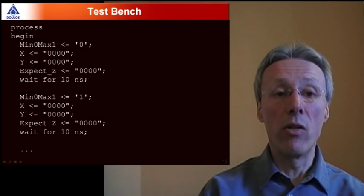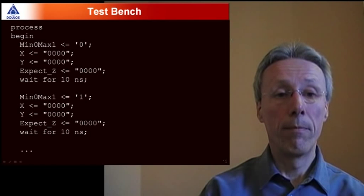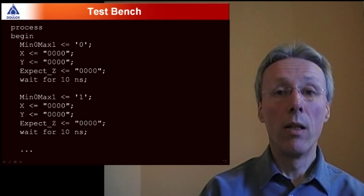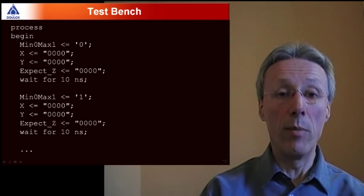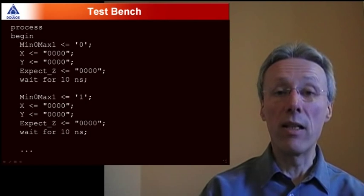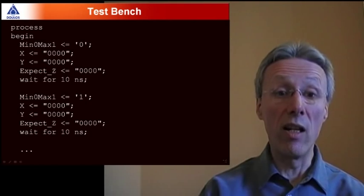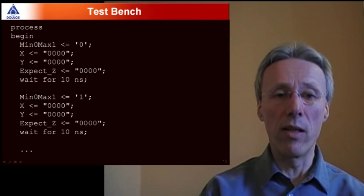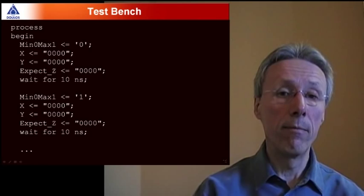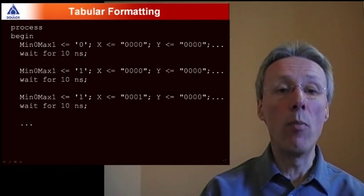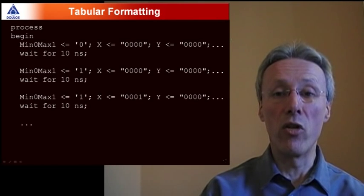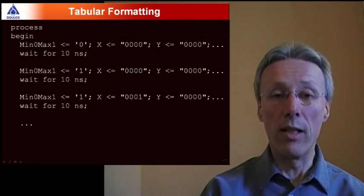Now let's have a look at a test bench going back to the min max circuit as the example. So here's a test bench again taken from an example of one of our training classes. So the process inside the test bench is generating directed test vectors to test this min max circuit. So it makes some assignments to some signals, waits for some time, makes some more assignments and so on. A very straightforward piece of straight line code but it does tend to get rather verbose as you repeat the same block of code again and again. So sometimes people try to make this a little bit more readable just by using tabular formatting. We could line up all of our signal assignments on a horizontal line just to make the assignments a little bit more readable.